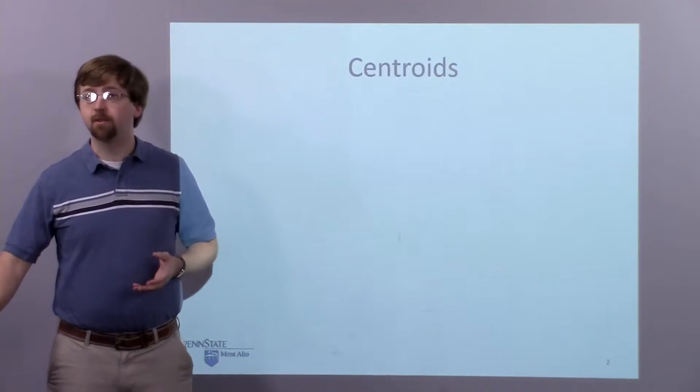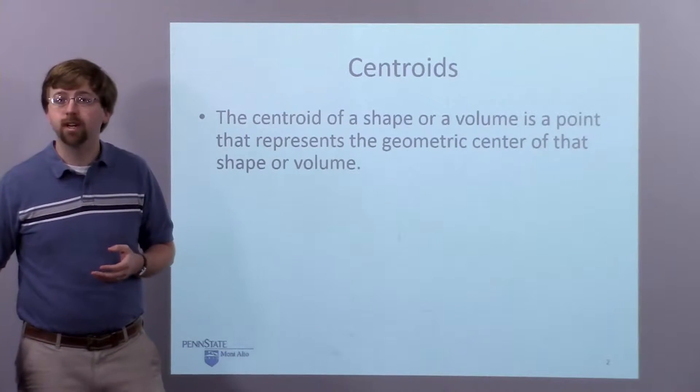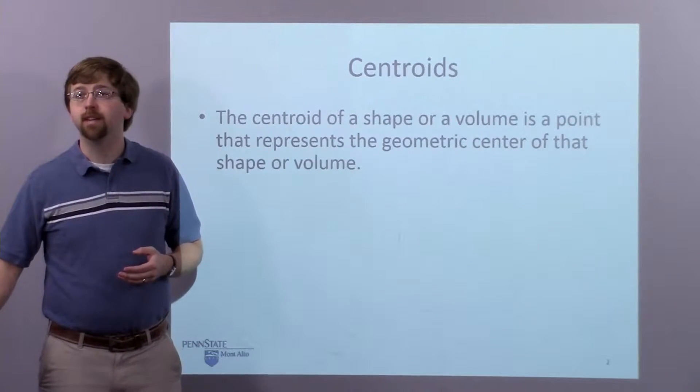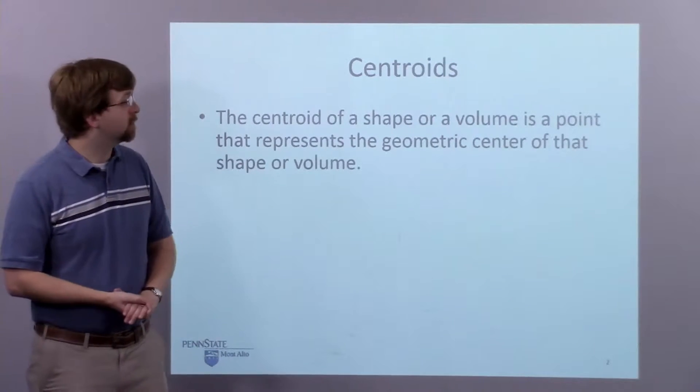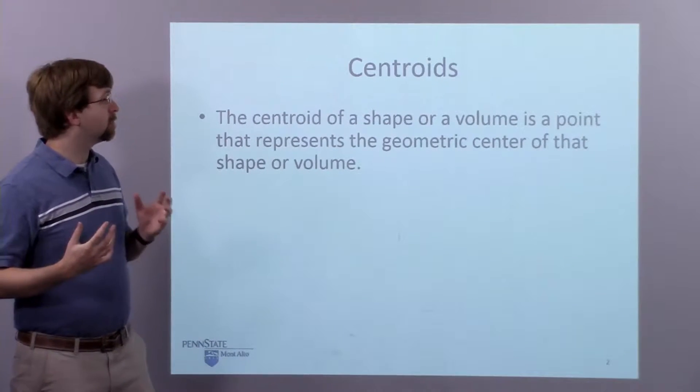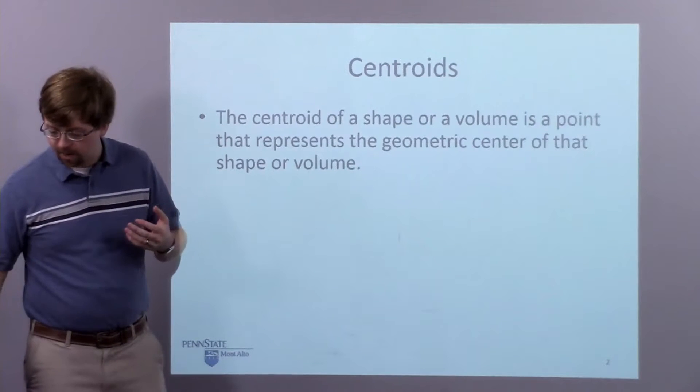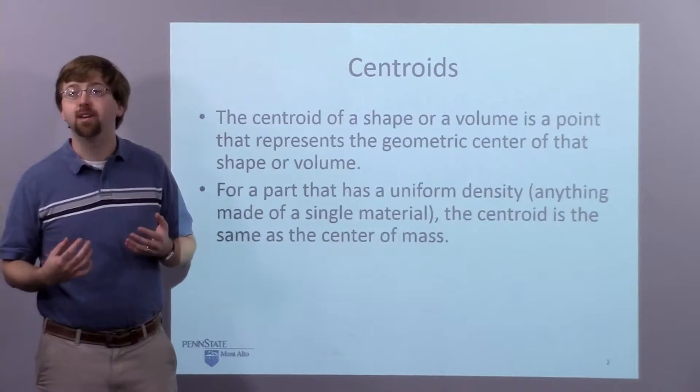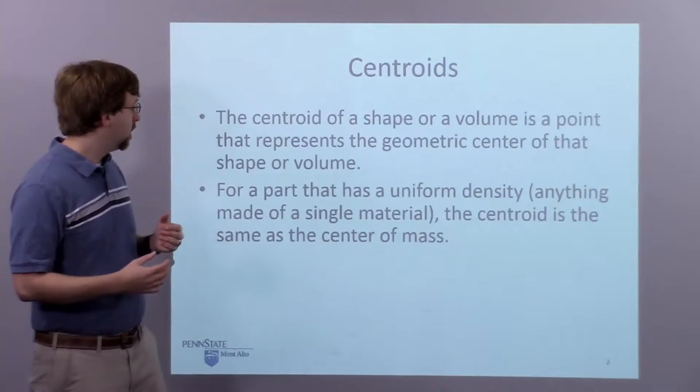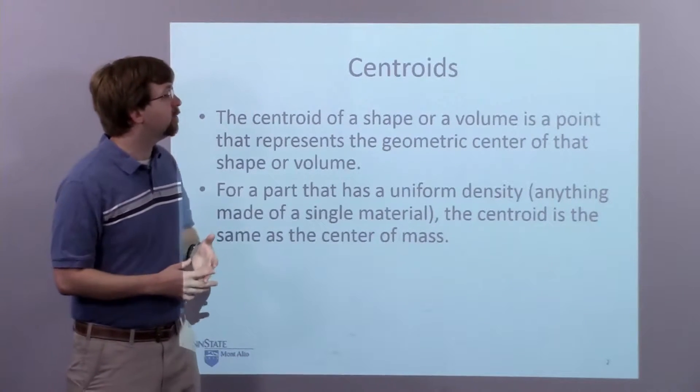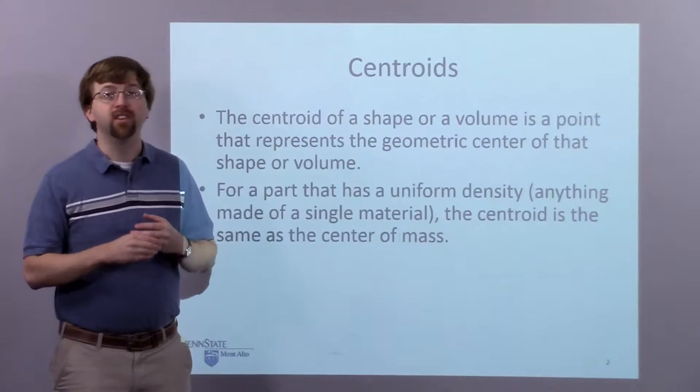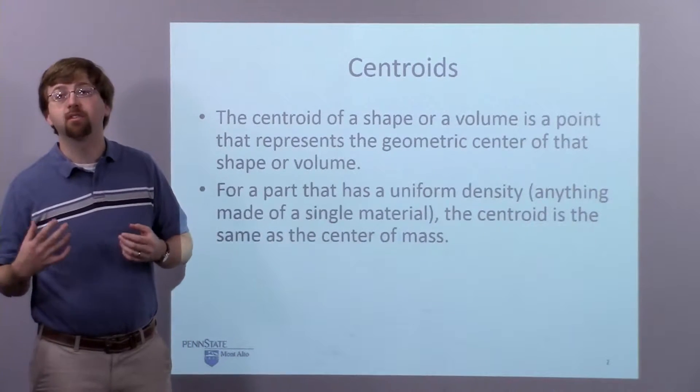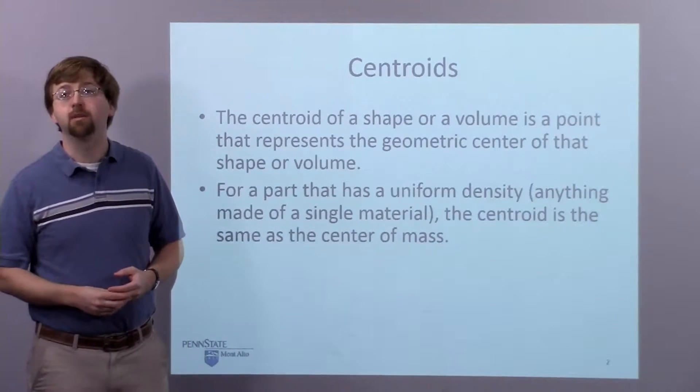So just as kind of a review, the centroid of a shape is going to be the geometric center of that volume for a 3D problem. So this point represents the average x, y, and z coordinate of our shape. For a part that has a uniform density, anything that's made of a single material, the centroid of that volume and the center of mass of that volume are going to be the same thing.